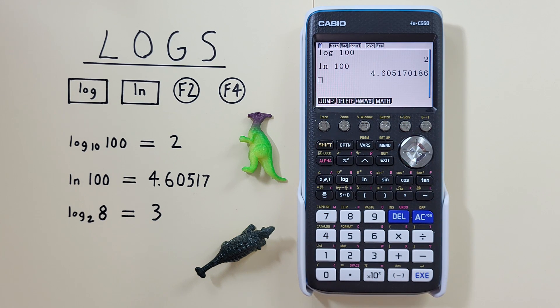What if we want to find a log that isn't log base 10 or natural log? For example, log base 2 of 8.